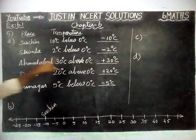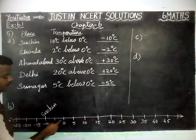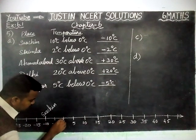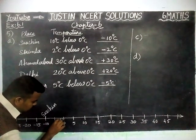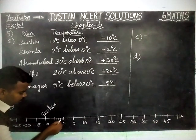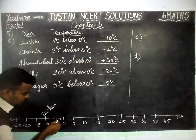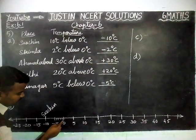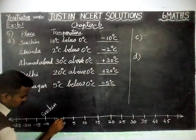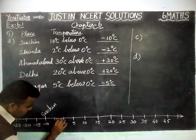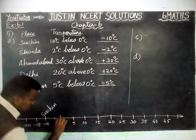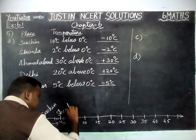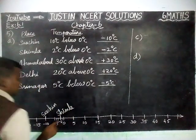And then, Simla is minus 2 degree Celsius. Here, between 0 and minus 5 there are 4 intervals: minus 1, minus 2, minus 3, minus 4. So after 0, minus 1, minus 2 — this point is minus 2. So this is Simla.